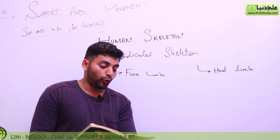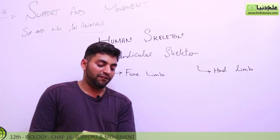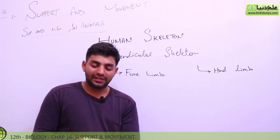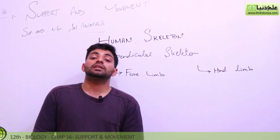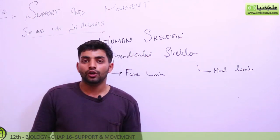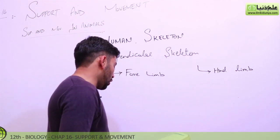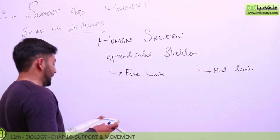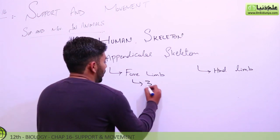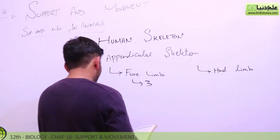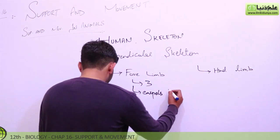If we go to the bone distribution, the forelimbs consist of humerus, radius, and ulna — that is 3 bones. Then there are eight carpals. So we have 3 plus 8 giving us 11 bonds so far.